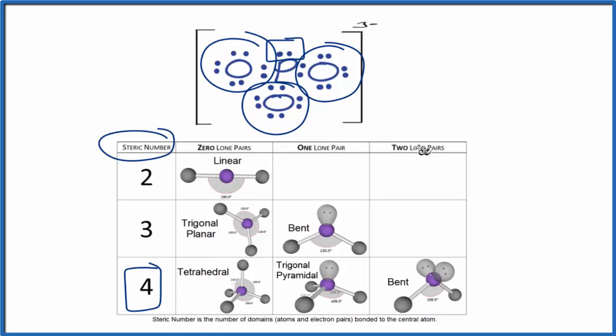Next, we'll look at the lone pairs here. So we can see there's just one lone pair. So we go down. This is trigonal pyramidal, and we expect the bond angle to be about 109.5.